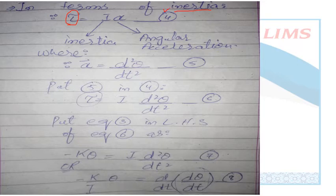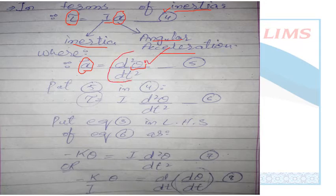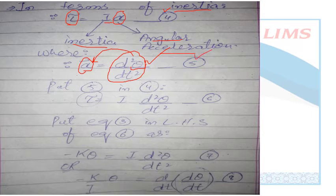Torque equals I·alpha, where I is the moment of inertia and alpha is the angular acceleration. Angular acceleration is the rate of change of angular velocity. When you take the derivative of velocity, you get acceleration — so angular acceleration is the second derivative of angular displacement (d²θ/dt²). We substitute this value of alpha (Equation 5) into Equation 4 to get Equation 6.